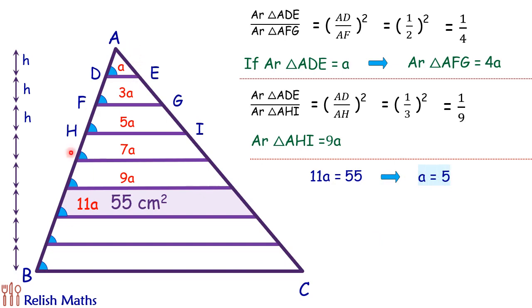Now we have to find the area of the full triangle ABC. So for ABC, the ratio is nothing but ratio of height is 1:8. So we can say area of triangle ADE upon area of triangle ABC...